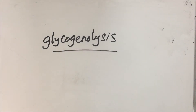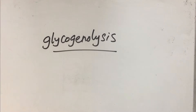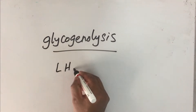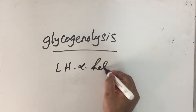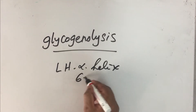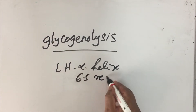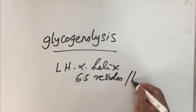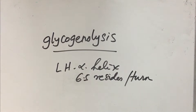In a previous video on glycogen structure, we looked at the detailed structure of glycogen and how it forms a left-handed alpha helix with 6.5 residues per turn. We also looked at the kind of branching that occurs in the structure of glycogen.